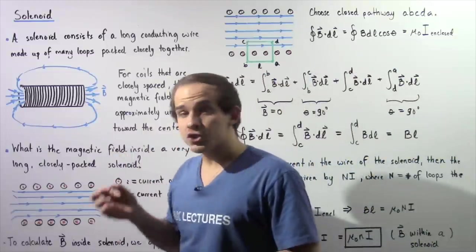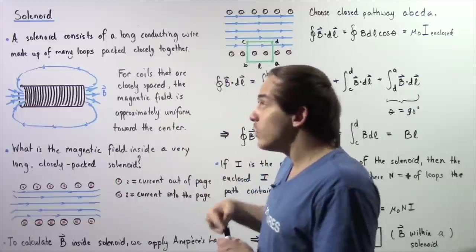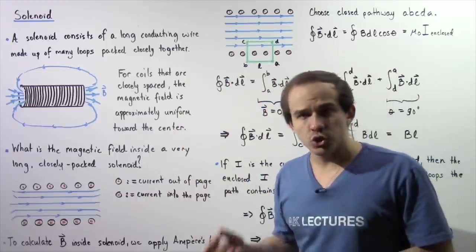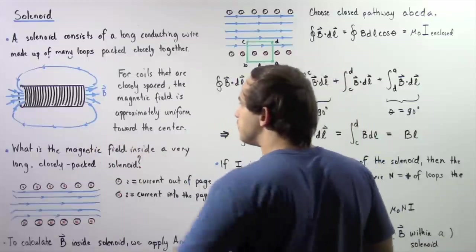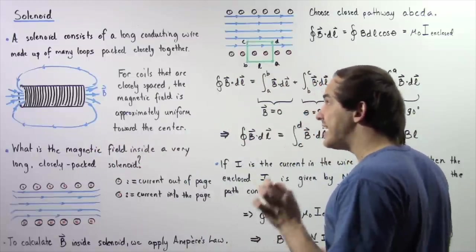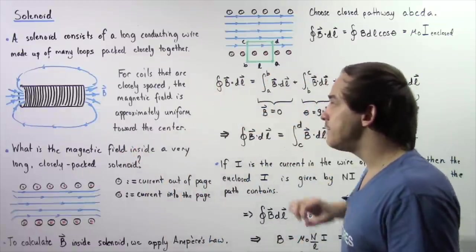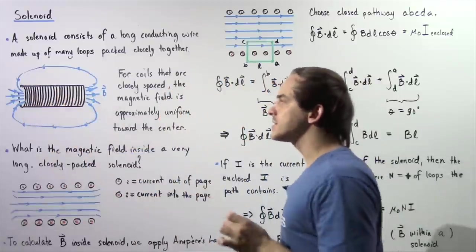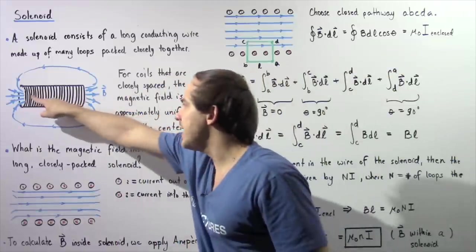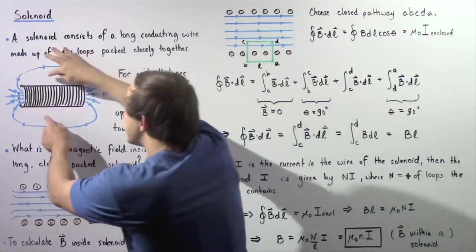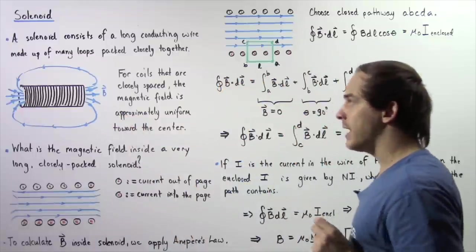If we allow an electric current to flow through our wire it will produce a magnetic field, which implies that a solenoid also produces a magnetic field. That magnetic field is described by the magnetic field lines shown in blue. For a solenoid in which the coils are packed very closely together, the magnetic field inside is approximately uniform — the field lines are parallel to one another inside the solenoid. In the regions right outside the solenoid, the magnetic field can be approximated to be zero.